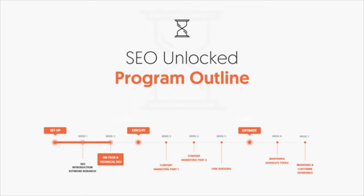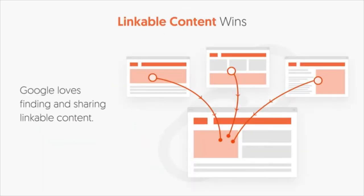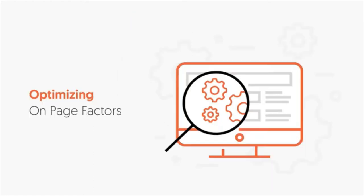We're already in week two, and we're going to be going over on-page and technical SEO. I'm really excited for week three because that's where we get into content marketing. Everyone knows that linkable content wins — the more people that link to you, the easier it is for Google to find your site and the higher you're going to rank. There are many types of links: links from other sites to you, as well as internal links between pages within your own site.